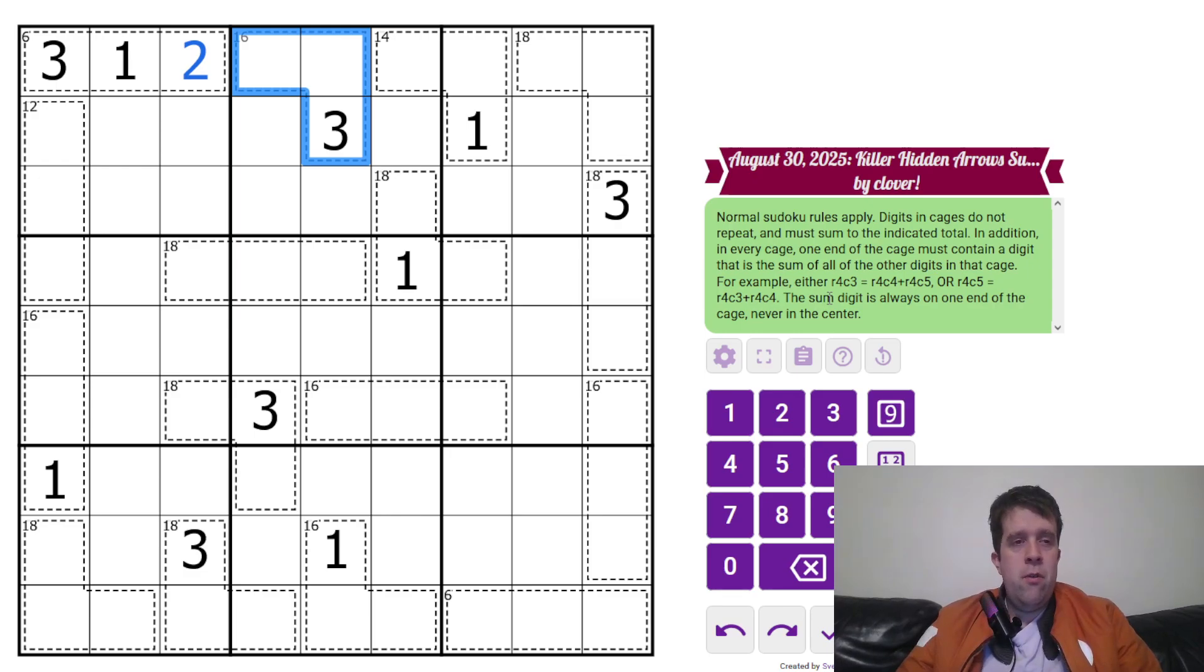I'm going to get into it now. Let's do it. I'm going to leave that because that's fair. Now, key part with Killer Hidden Arrows is whenever you're trying to figure out what's supposed to go in the cage, remember, at one end of the cage, you should have half the total of the cage.